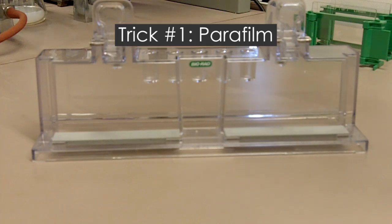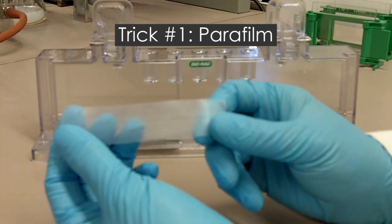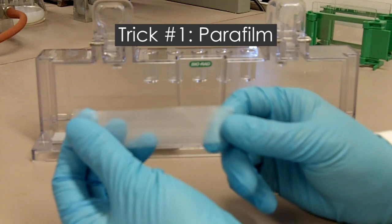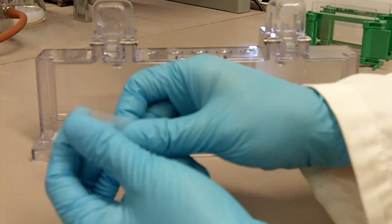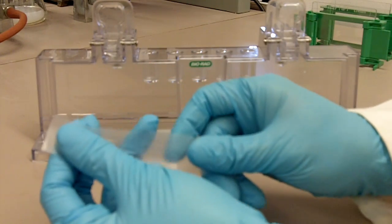Okay, so the first trick is to use the parafilm. So here I have a piece of parafilm. And right now it's too small to cover the seal. So what we have to do is we'll stretch it a little bit.